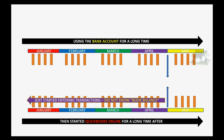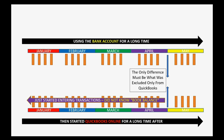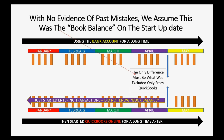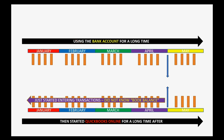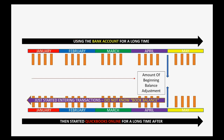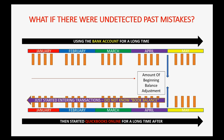So let's imagine you started entering transactions at the beginning of using QuickBooks and you did not know the book balance. The only difference in that case must be what was excluded only from QuickBooks. With no evidence of past mistakes, we assume that this different amount was the book balance on the startup date. The amount of the beginning balance adjustment should be the amount that was, or should have been, the book balance at the moment we started using QuickBooks.